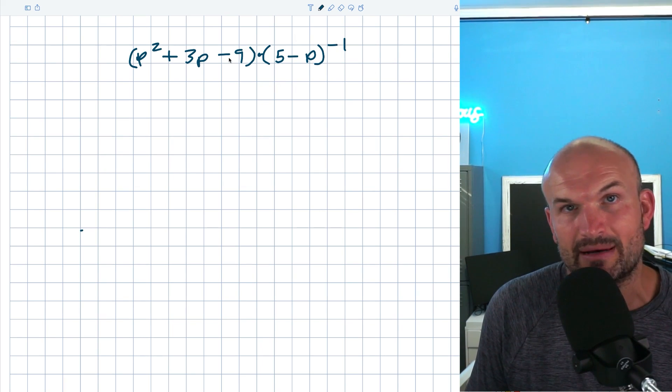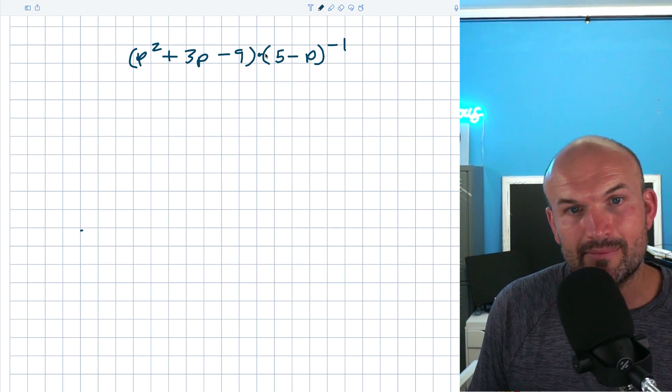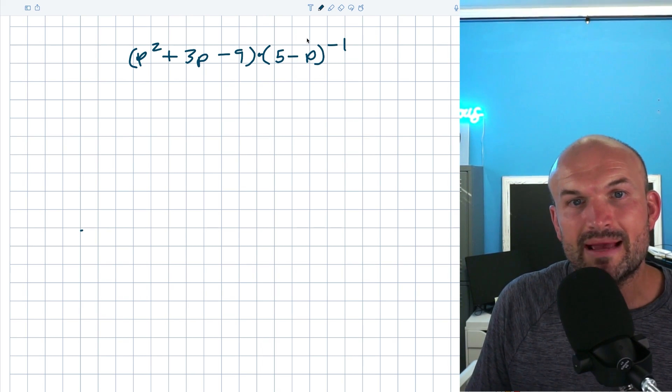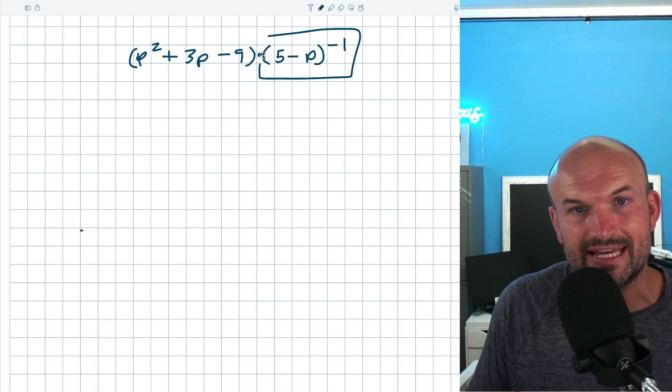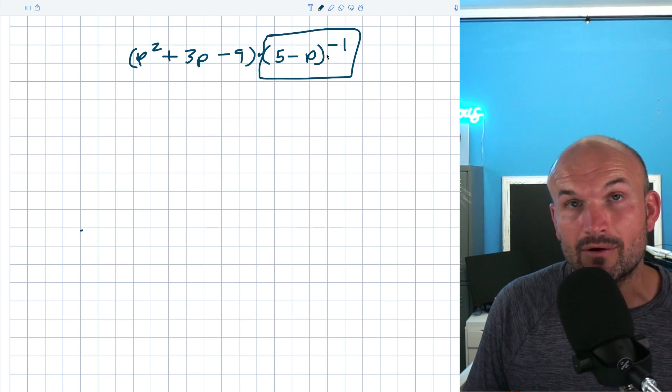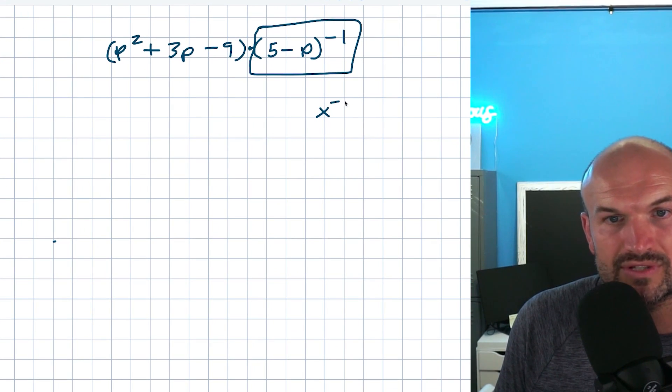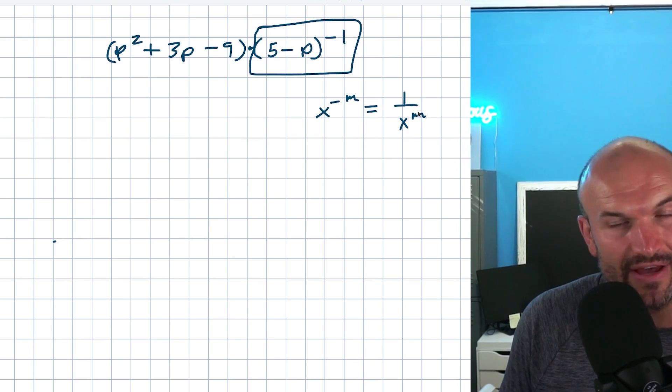The first thing I think students need to understand about this problem is it is a division problem. Now they might see the multiplication between their two terms and they recognize, well, how is this a division problem? The main thing we need to understand here is whenever we have a term raised to a negative power, that really means that's actually supposed to be in the denominator. Because remember our exponent rules, if I have x to the negative m, then that can be the same thing as 1 over x to the positive m.